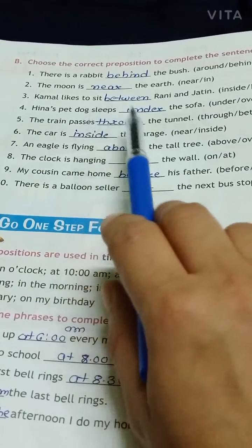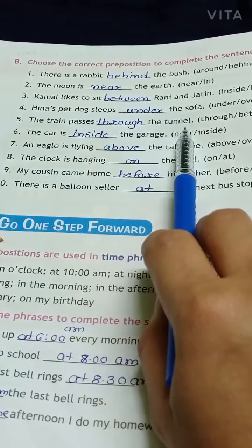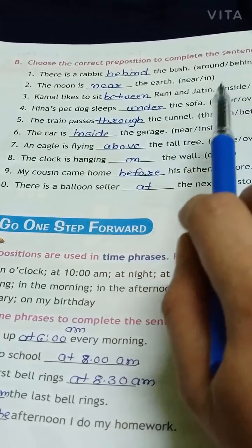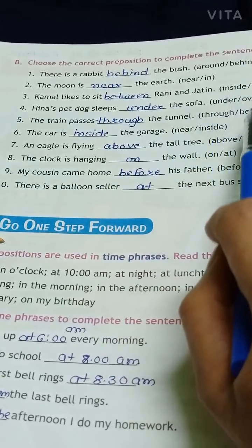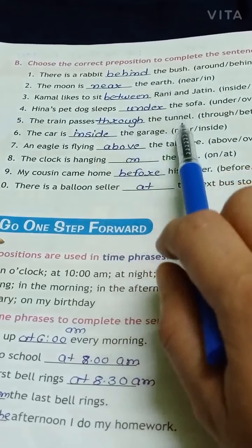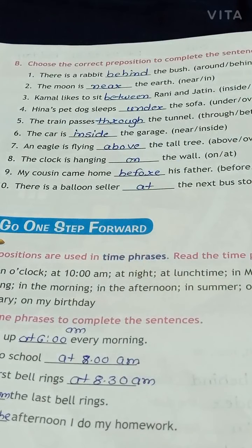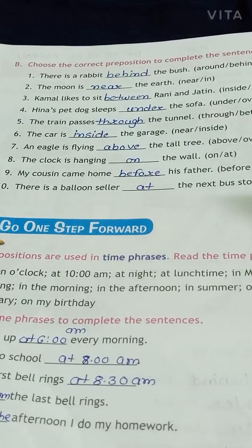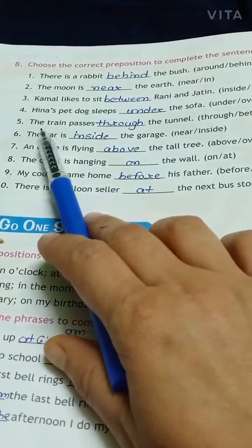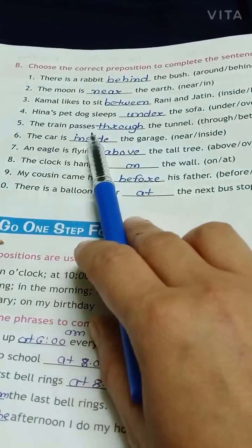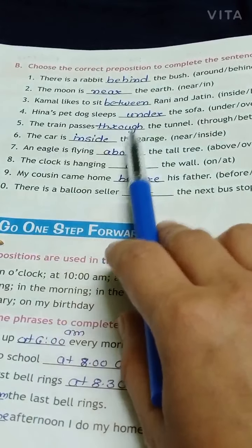Number five — passes blank the tunnel. Through means में, से, और between means के बीच. तो train यह tunnel की बीच में से नहीं जा सकती है — train यह tunnel से होकर गुजरती है. So right here through. The train passes through the tunnel.